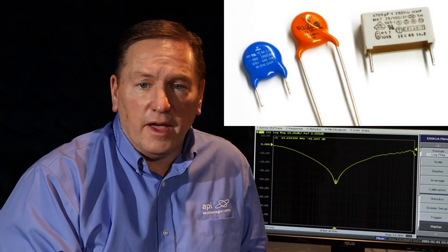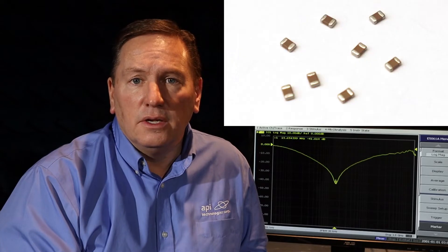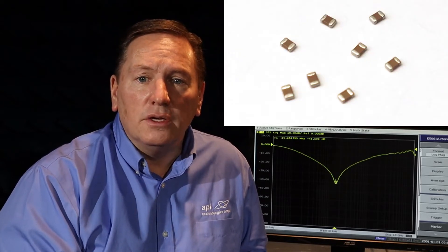The first effect is the self-resonant frequency of a capacitor, and the second effect is the lack of a shield to isolate the input of the filter from the output of the filter. These two physical limitations increase directly with frequency, so that by 1 GHz, there is often no effective filtering at all.